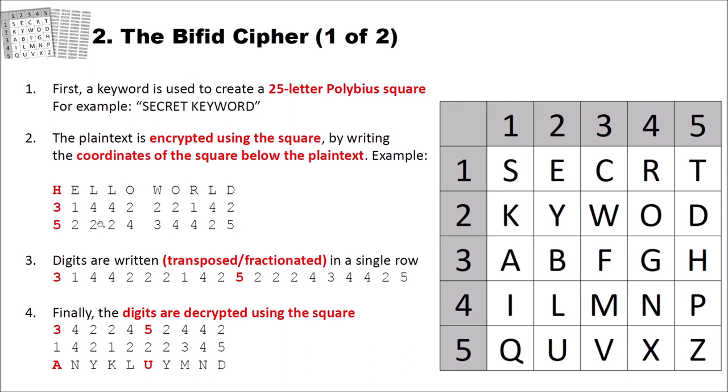Then the digits are written, or you can say transposed and fractionated, in a single row. How does this work? You first write the first row of your digits, and then you continue with the second row of digits directly after the first row. And here you can see why we say this cipher fractionates, because the letter H produced the 3,5 here, and the 3,5 are split in two parts, the 3 here and the 5. They are fractionated.